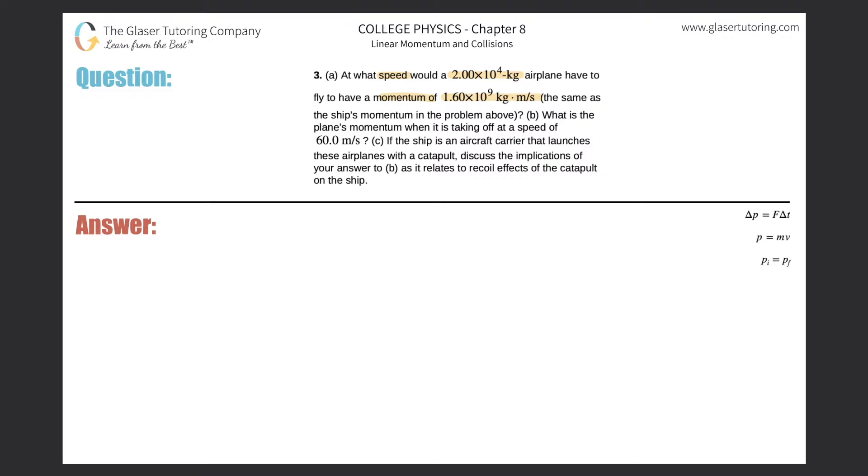Okay, so letter A. They're asking us for speed, and they're giving us mass and momentum. Therefore, what's the equation that relates those three? It's over here on the right-hand side. The momentum is equal to the mass of the object multiplied by its velocity.